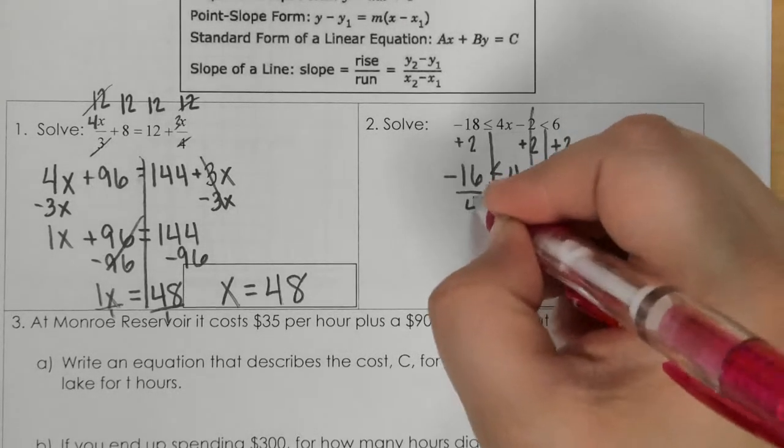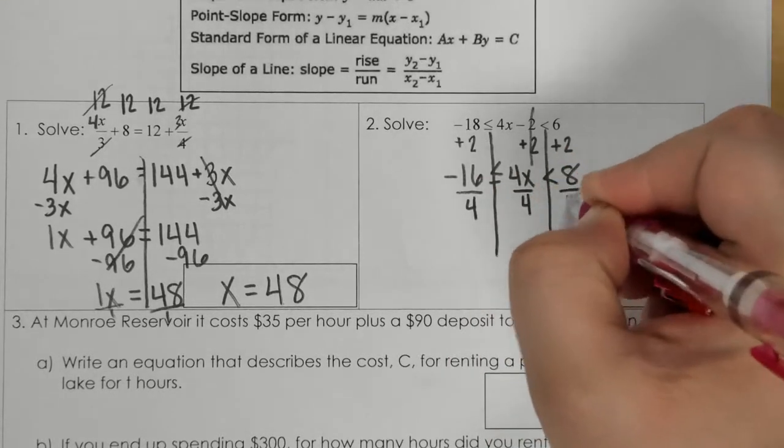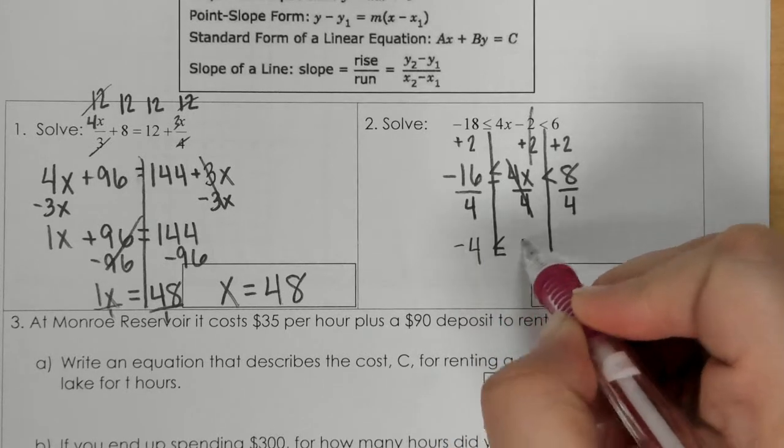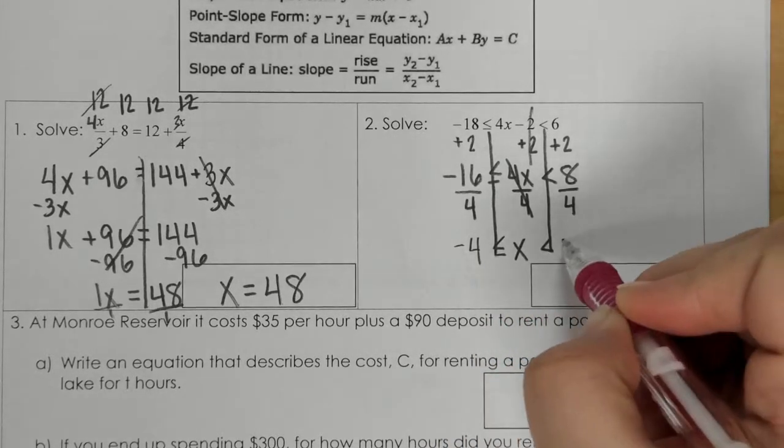Now, we divide by 4, and we get negative 4 less than or equal to x less than 2.